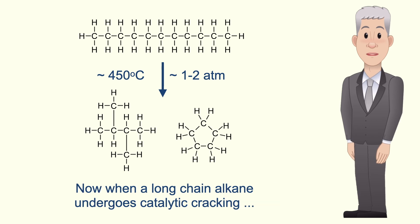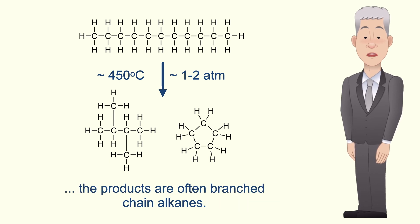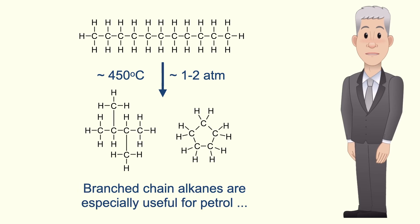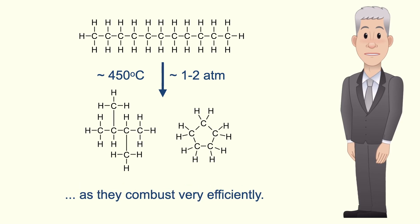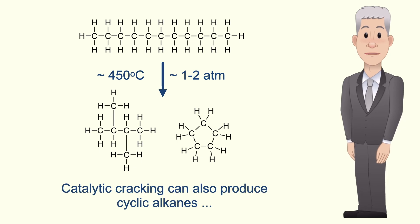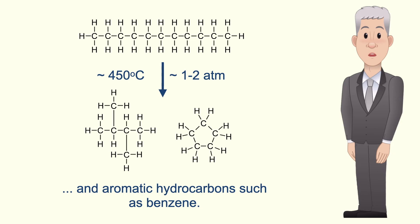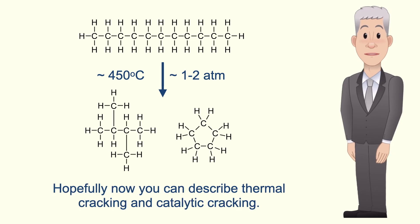When a long chain alkane undergoes catalytic cracking, the products are often branched chain alkanes. Branched chain alkanes are especially useful for petrol as they combust very efficiently. Catalytic cracking can also produce cyclic alkanes and aromatic hydrocarbons such as benzene. Hopefully you can now describe both thermal cracking and catalytic cracking.